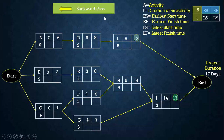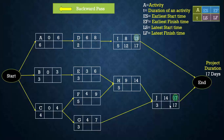Now we will perform the backward pass to find the latest start time and latest finish time of individual activities. Activities I and J are the tail activities with no succeeding activities. The latest finish time of activity I is the total project duration, which is 17, and the latest start time of I is 17 minus 5, which is 12. For activity J, the latest finish time is 17 and the latest start time is 17 minus 3, which is 14.